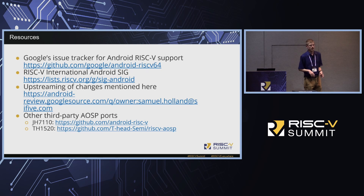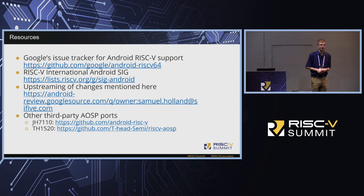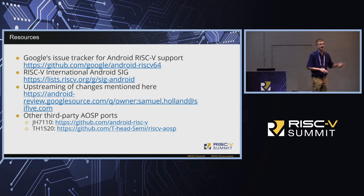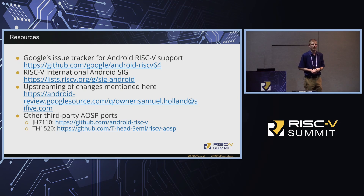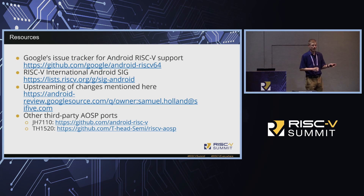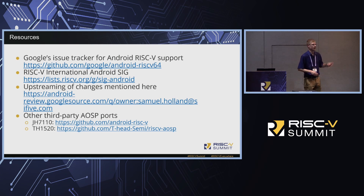There are a few resources useful if you're interested in Android and RISC-V. The main one is Google's Android RISC-V 64 issue tracker — a clearinghouse for people's experiences trying to get Android running, issues with Android mainline, and a big to-do list for what needs to be done. RISC-V International also has an Android SIG if you're a member. And there's a link to the things I've uploaded to Gerrit and third-party AOSP ports for other RISC-V SoCs available as developer boards today.